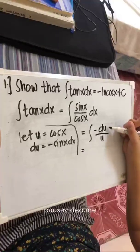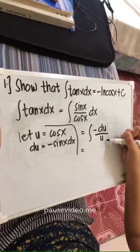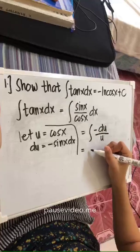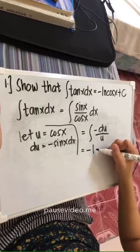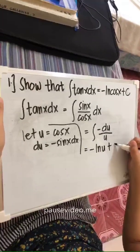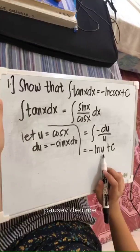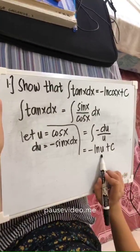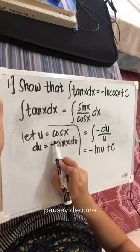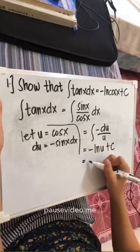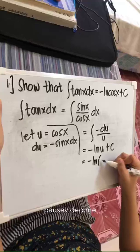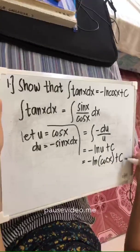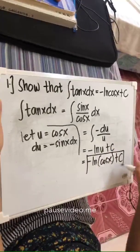As we know, the integral of du over u is ln u. But since it's negative, we have negative ln u plus c. Since u is not yet the original answer, we replace u with its original value, which is cos x. So we have negative ln cos x plus c. This is our final answer.